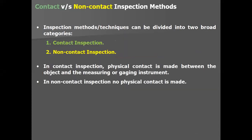Contact versus non-contact inspection methods — this is another category. Inspection methods or techniques can be divided into two broad categories: contact type and non-contact type of inspection. As the names suggest, there is physical contact involved in contact inspection, and no physical contact in non-contact inspection.